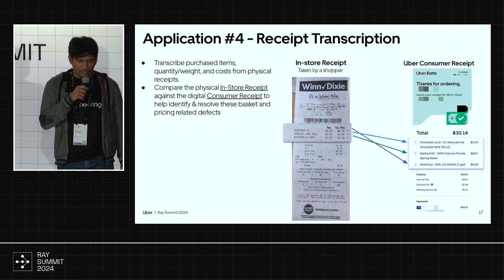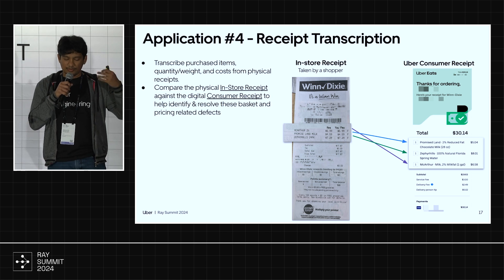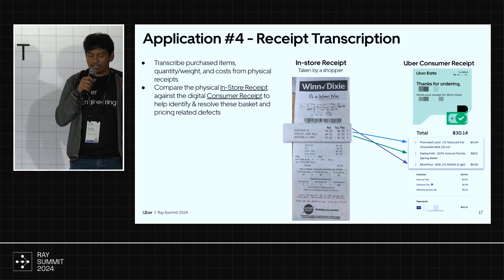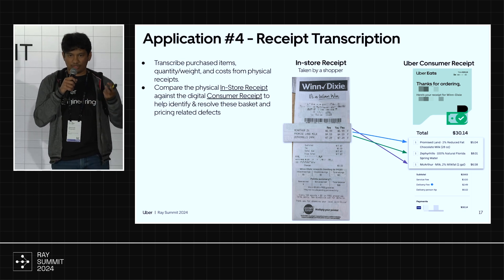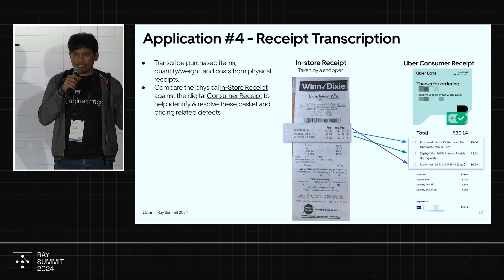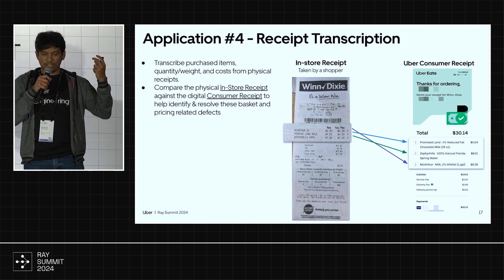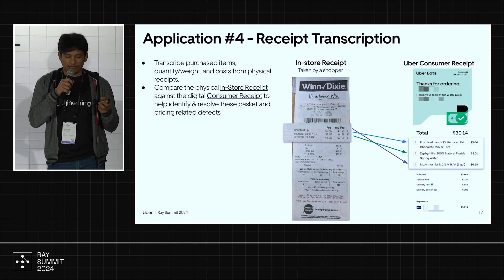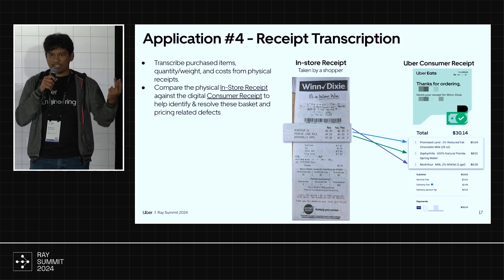The fourth use case is receipt transcription. Receipts come in various forms with items requiring quantity and weight extraction. When a user orders something on Uber Eats, we have a digital copy of the order, so we match the physical receipt to the digital copy. Our foundation model extracts various entities from the receipt, and then matching criteria reconcile it back to the digital receipt.